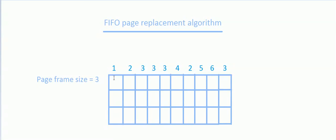I will explain this algorithm with an example. Suppose you have a page frame with size 3 and the pages that we want to refer are 1, 2, 3, 3, 3, 4, 2, 5, 6, and 3 in order. The first page that we are going to refer is 1.